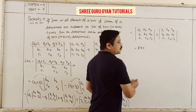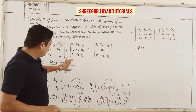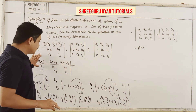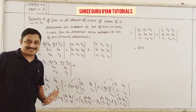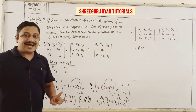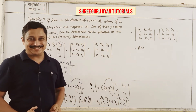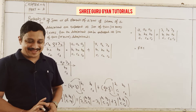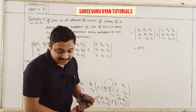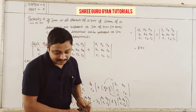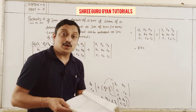In short, if any row or column is given in addition form, you can make the separation into two determinants. Either for columns also, you can make the separations.